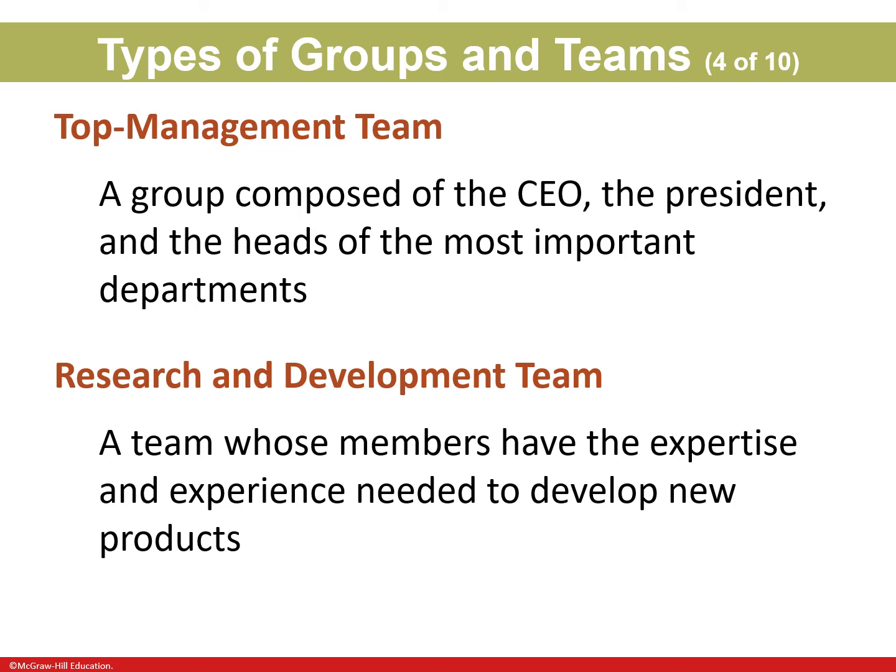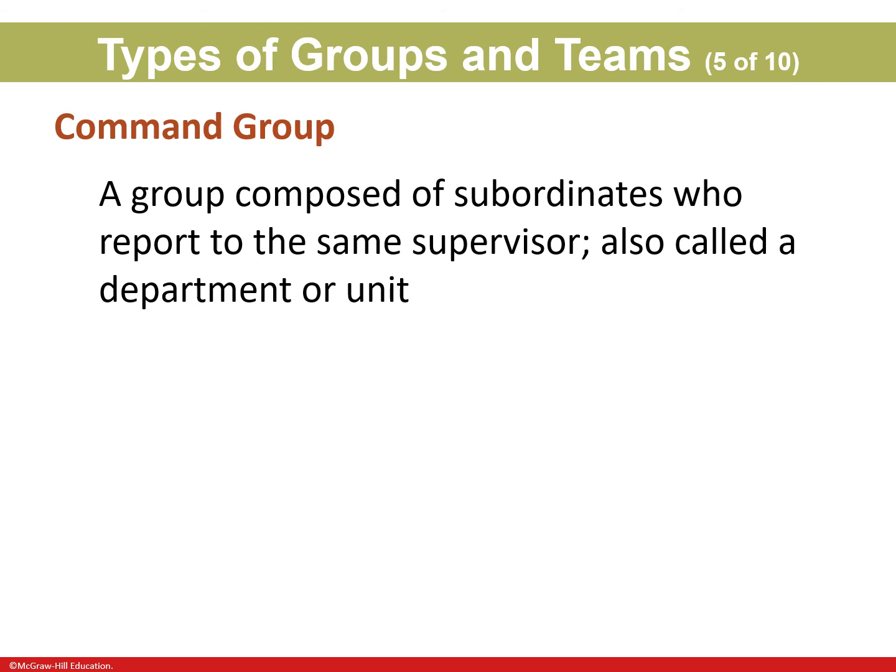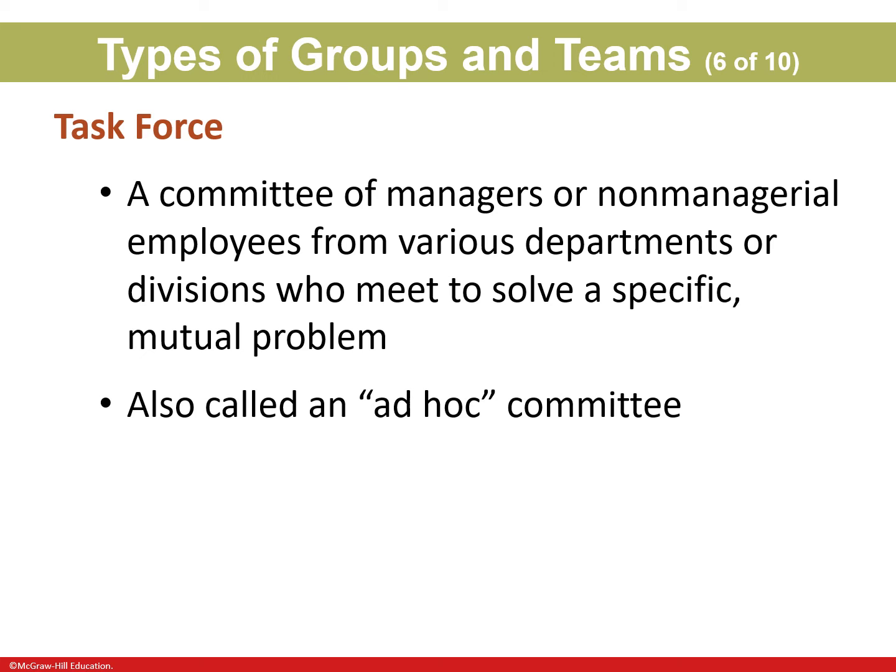A research and development team is one whose members have the expertise and experience needed to develop new products — depending on the organization, this can be quite a large group. A command group is composed of subordinates who report to the same supervisor, also called a department or unit — examples include marketing, finance, operations, and accounting.